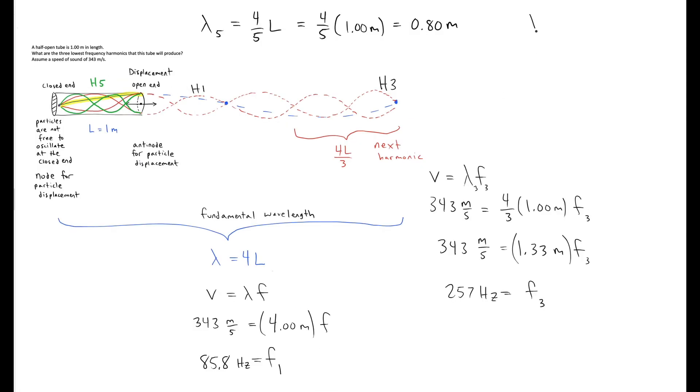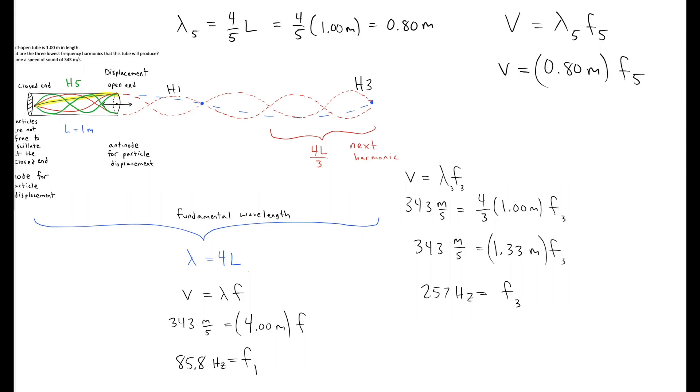Finally, I'll use the wave speed equation and apply it now to this fifth harmonic. And the frequency I get is 429 hertz, which is 5 times the frequency of F1.